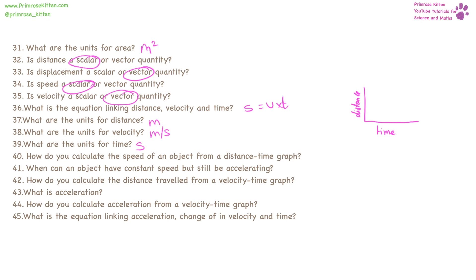From a distance-time graph, you can calculate the speed of an object by looking at the gradient of the line. An object can have constant speed but still be accelerating if it is changing direction — for example, if it's going in a circle.